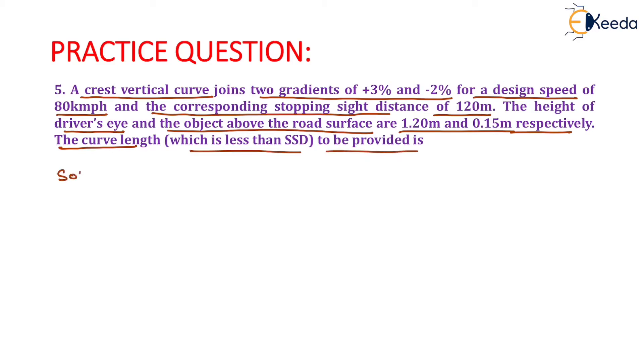Now the first case which we need to assume is when the curve length is less than the stopping sight distance. So, the value of curve length will be equals to 2s minus 4.4 upon n.